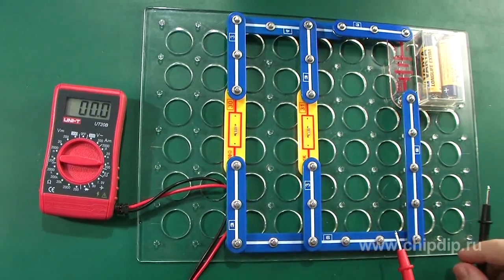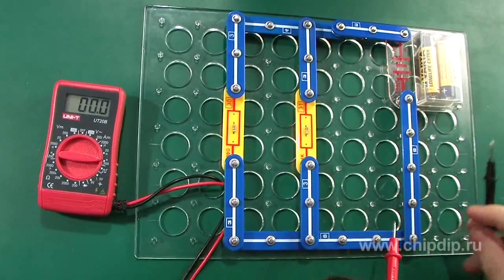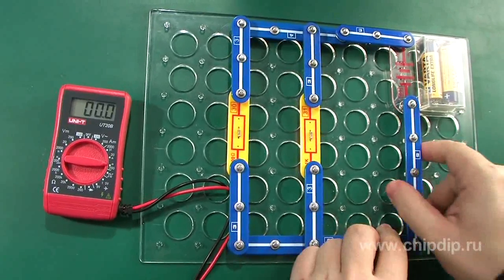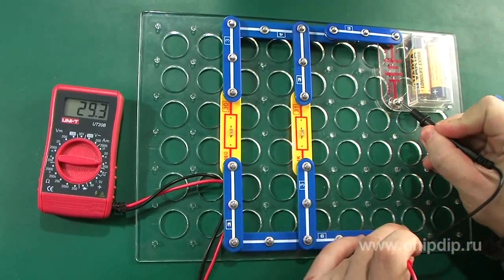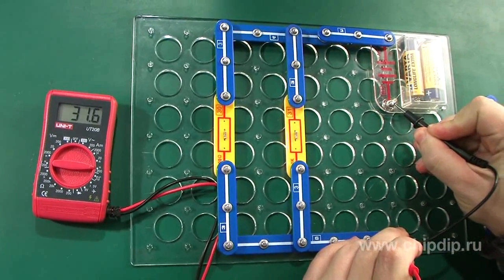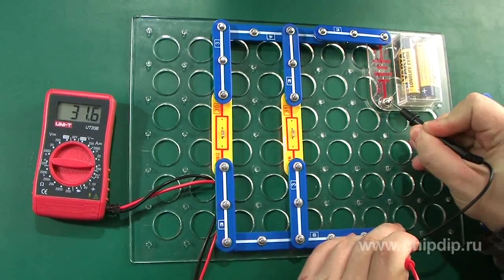Let us demonstrate Kirchhoff's law in this circuit, where two resistances are connected to a power source. Let us measure the current from the source. It is 31.6 mA.